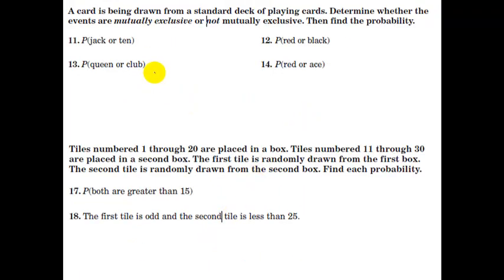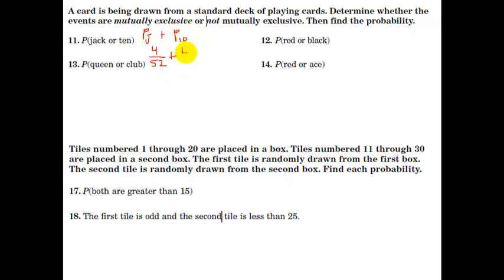A card is drawn from a standard deck. Determine whether the events are mutually exclusive, then find the probability. For a jack or a ten: yes, these are mutually exclusive, because if you get a jack you didn't get a ten and vice versa. The probability of getting a jack is four out of fifty-two, and the probability of a ten is also four out of fifty-two. So the total probability is eight out of fifty-two, which reduces to two out of thirteen.